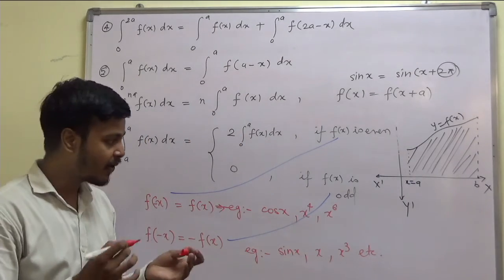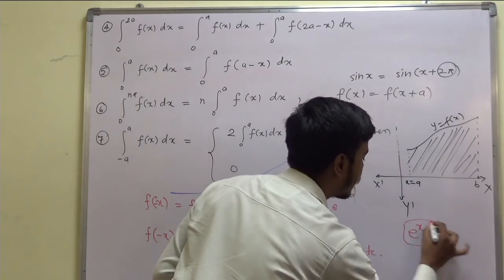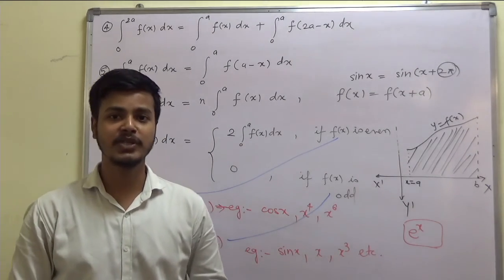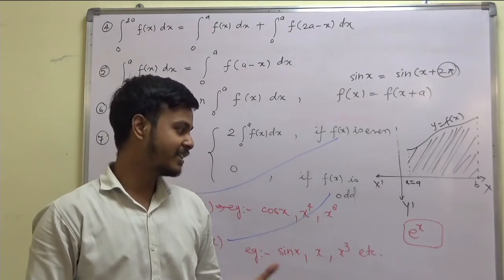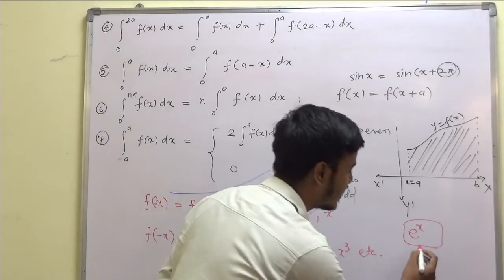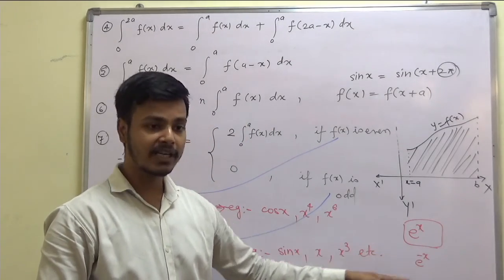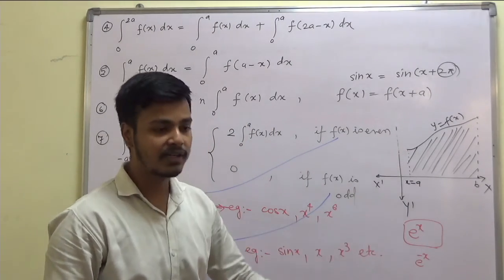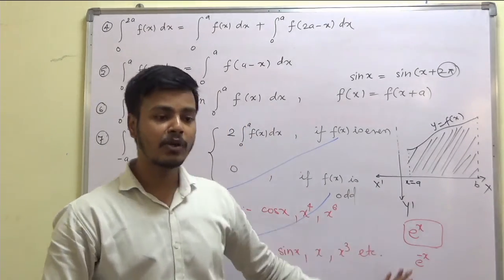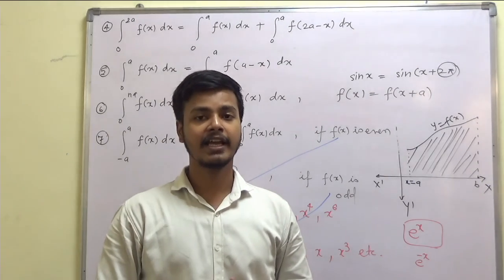Now I would like you to check this function: e to the power x. What can you say about this function? Pause the video for a few seconds, come up with your answer, and resume. You may be wondering — this function is neither even nor odd, because if f(x) equals eˣ, then f(−x) equals e^(−x), which is not the same as f(x) nor −f(x). So eˣ is neither even nor odd. I hope these properties and terminologies discussed in this video are clear to you. Thank you for watching and good day.